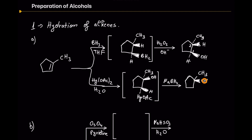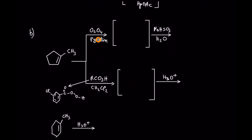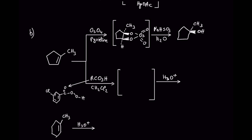Next, we saw the formation of diols. We had two methods: the first one with osmium tetraoxide yields a cis diol, and the one with meta-chloroperoxybenzoic acid yields a trans diol. Let's do the first one. Using osmium tetraoxide, we finally have the formation of a cis diol.